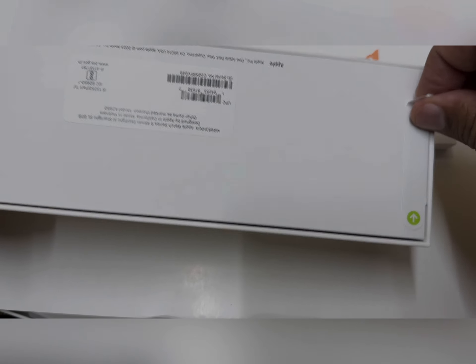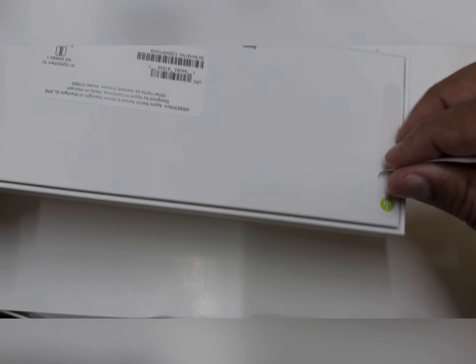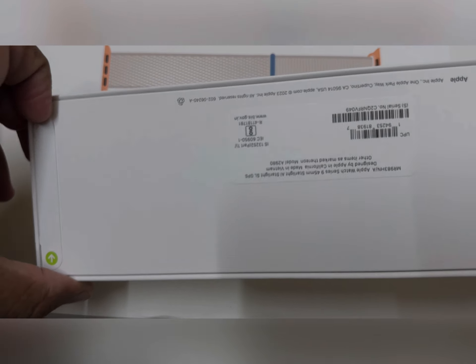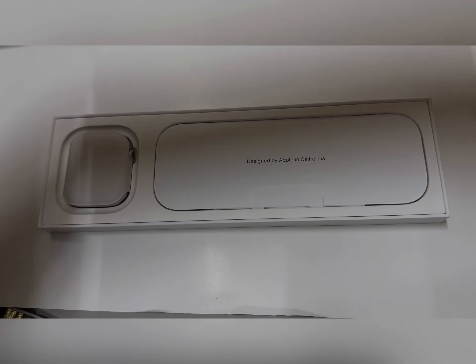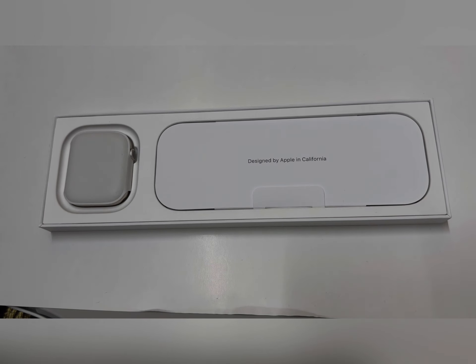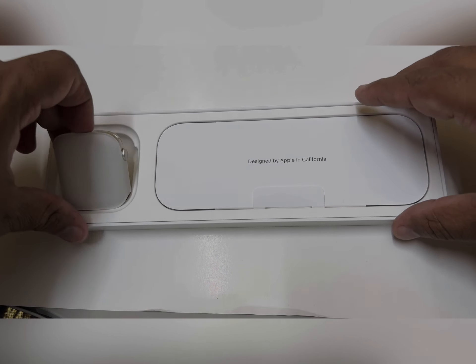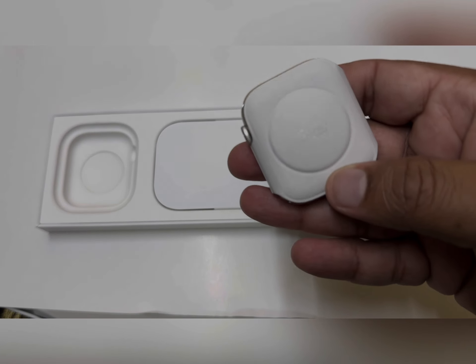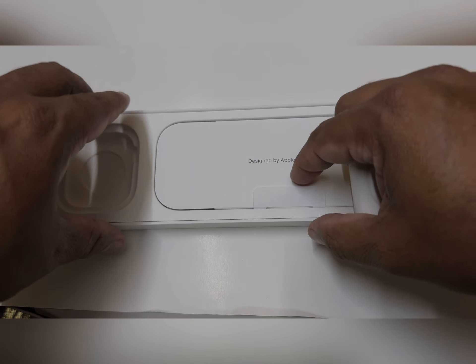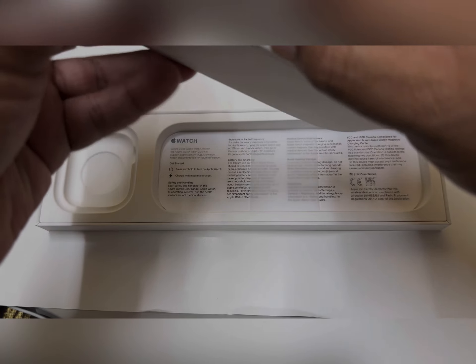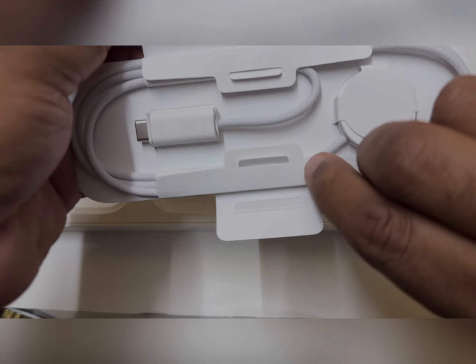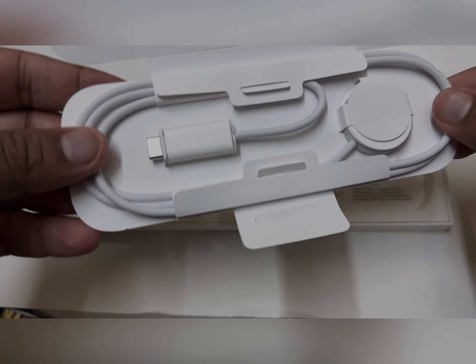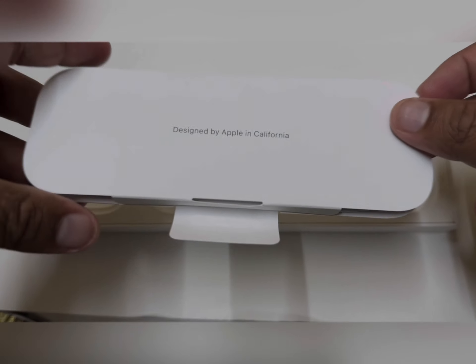Let's unbox the watch first. So this is how it feels—this is the Watch 9, 45mm. And we will also get a wireless charging cable, a braided C-type charging cable. Let's keep it aside for now.